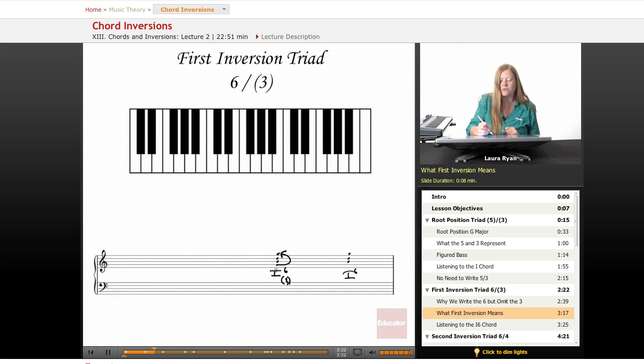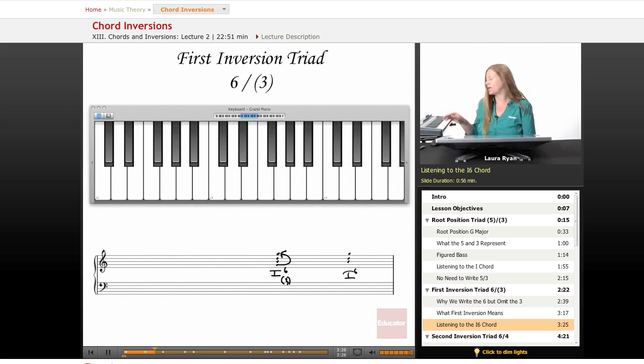This is the first inversion because we've taken the G and it's moved to the top. This is the first way you can invert the chord. Let's look at it. It makes a lot more sense to play it. So here's the root position. We're taking this G and we're just putting it on the top. It's still a G. It's still a G major chord. The thing that's changed is that we have a new note on the bottom.